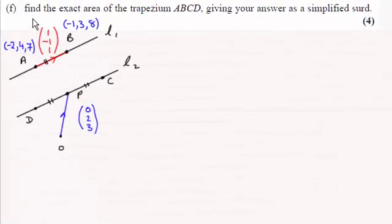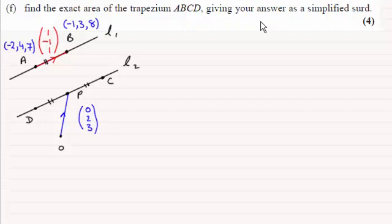Hi there. Now for this question we're asked to find the exact area of the trapezium ABCD, giving your answer as a simplified surd. This question echoes a point I've made many times when dealing with vector questions: always draw a diagram. I don't know how you could do this question really without a diagram. Your diagram might not look like the one we've built up so far, but it should still fundamentally have the same methods in it.